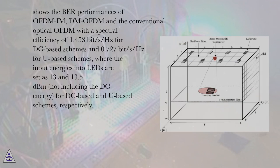The figure shows the BER performances of OFDM-IM, DM-OFDM and the conventional optical OFDM with a spectral efficiency of 1.453 bits per second per Hz for DC-based schemes and 0.727 bits per second per Hz for U-based schemes,